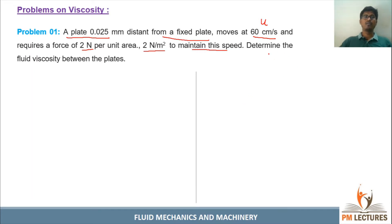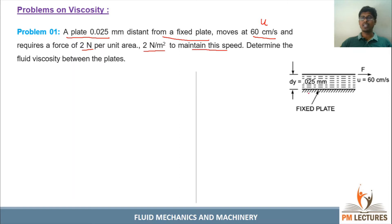We need to determine the fluid viscosity between the plates. Looking at the diagram: the bottom layer is the fixed plate, the top plate moves at 60 centimeters per second, and the distance between the two plates, dy, is 0.025 mm.